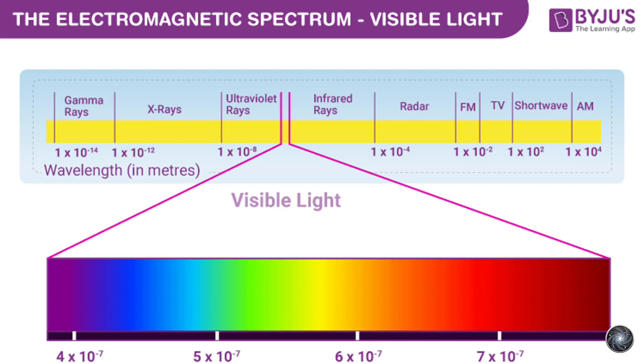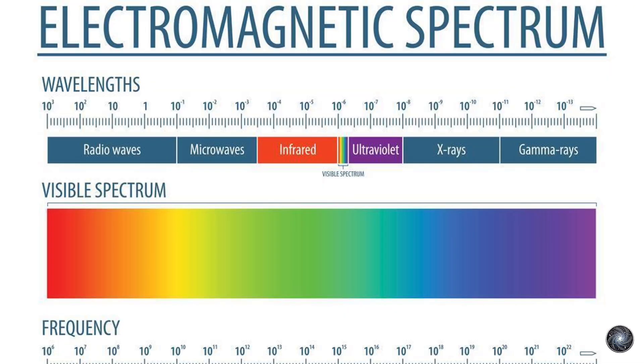Light, which we see every day, is just a small part of the electromagnetic spectrum which includes radio waves, microwaves, infrared, ultraviolet, X-rays, and gamma rays.